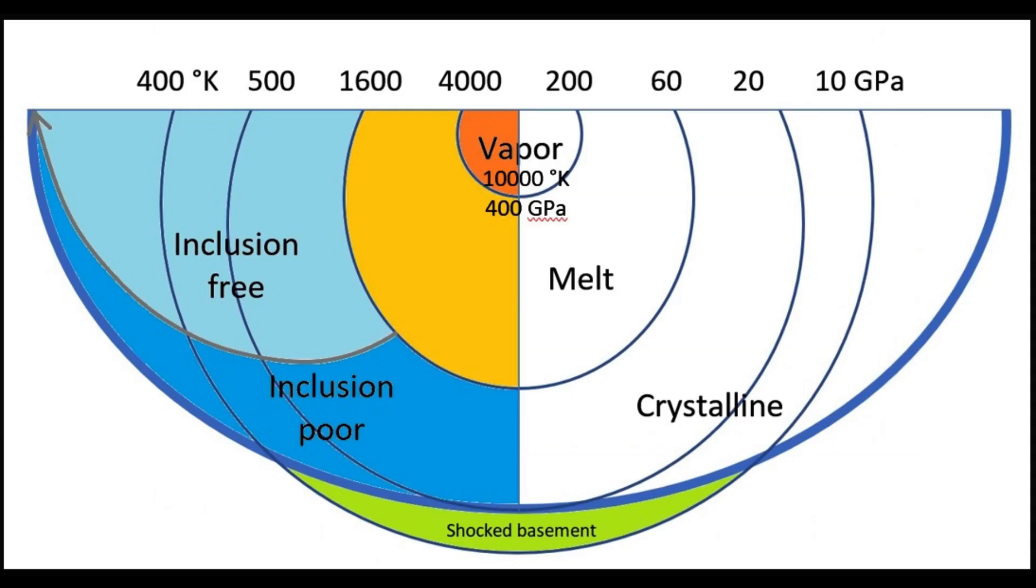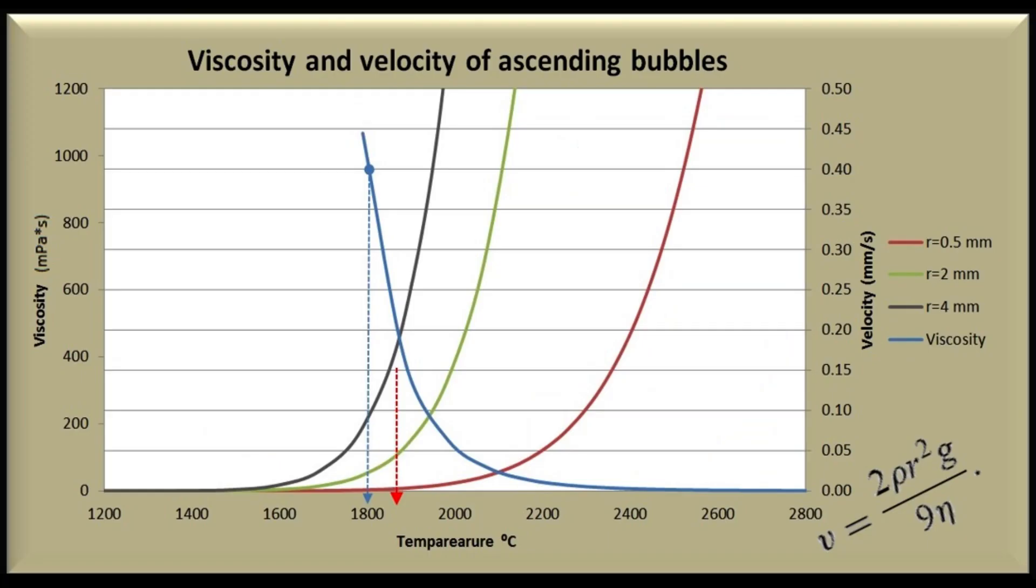Large impact crater temperature and pressure distribution. Splash form tektites are created in the melt and vapor zones, above 60 gigapascal and from 1,600 to 10,000 degrees Kelvin. Such temperatures and pressure are needed to create homogeneous glass. Such high temperatures and pressure can explain why splash form tektites show convection schlieren, contain almost no inside bubbles, and very few volatile elements. They are very dry.